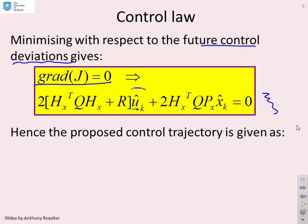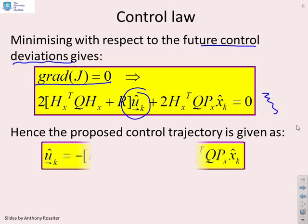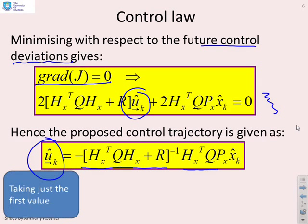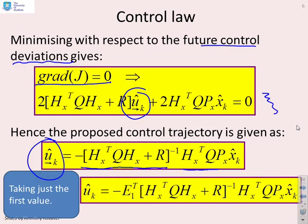I can now solve that in order to get U hat future with some simple algebra. And this is what I get: my future input deviations are given by this formula. H transpose QH plus R all inverse times H transpose QPx times X hat. Obviously, what we normally do in predictive control is take just the first value, and therefore I'm going to multiply by this E1 transposed vector, which extracts the first value from U future.